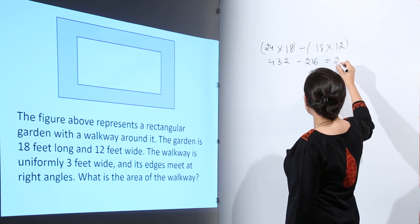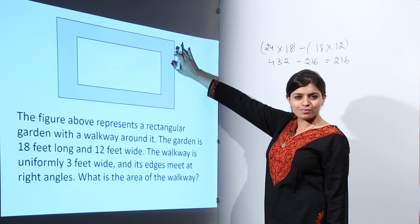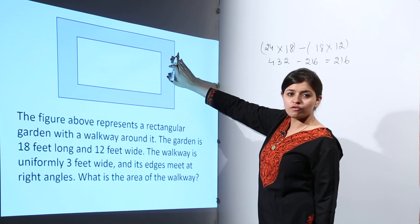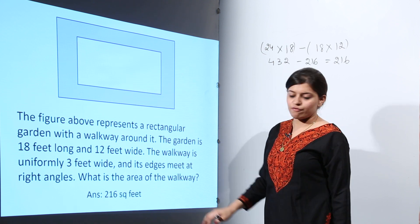If we subtract these two numbers, we get the value of 216. That means from the area of the bigger rectangle, we have subtracted the area of the smaller rectangle, and what we have is the area of the shaded portion, which is 216 square feet.